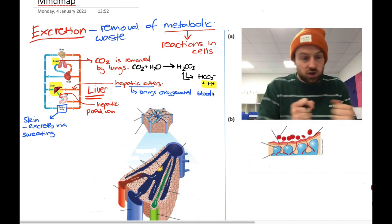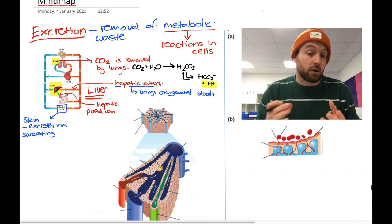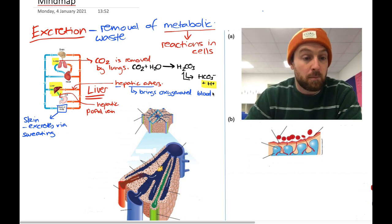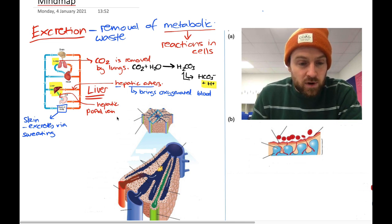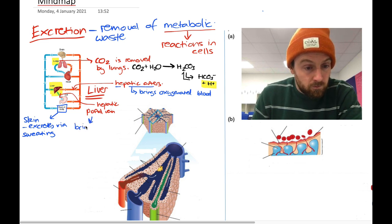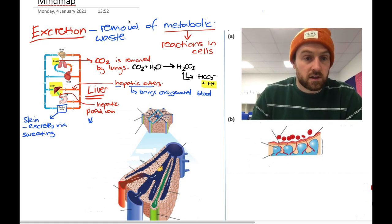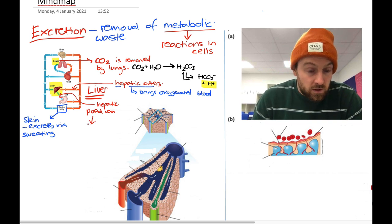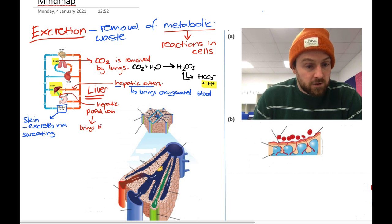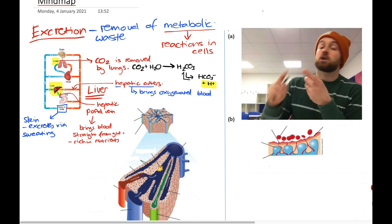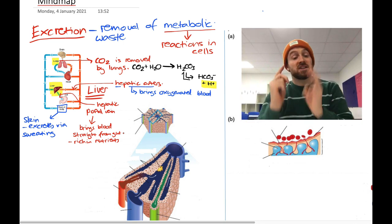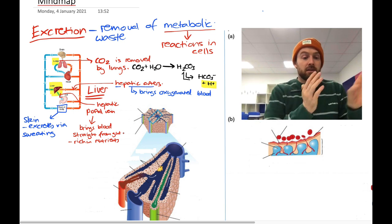The hepatic portal vein brings blood straight from the gut, and it is rich in nutrients — glucose, amino acids, fatty acids. Any byproduct of digestion absorbed in the small intestine is carried to the liver via the hepatic portal vein. After a meal, the blood might be really rich in glucose, and if that were allowed into the main bloodstream directly it might cause damage. The liver also handles toxin molecules that may arrive from the gut, helping to detoxify and break down those things.